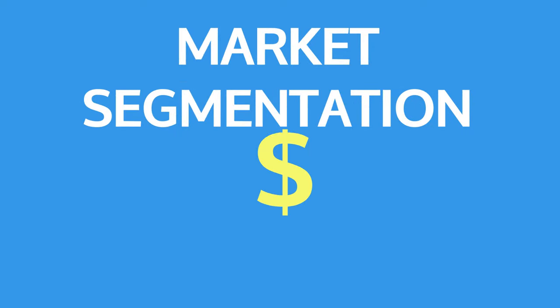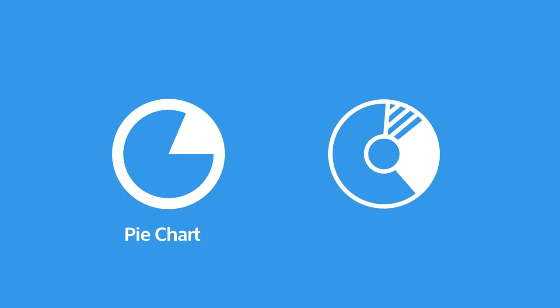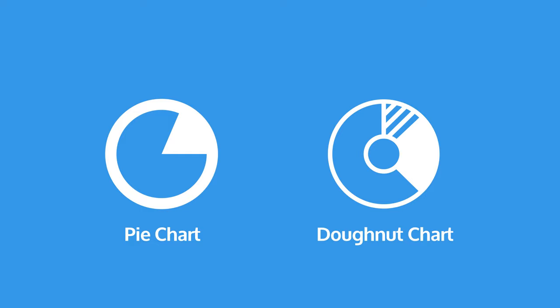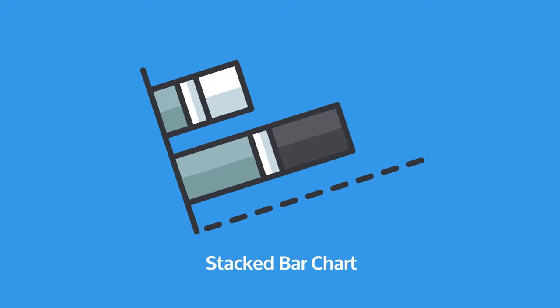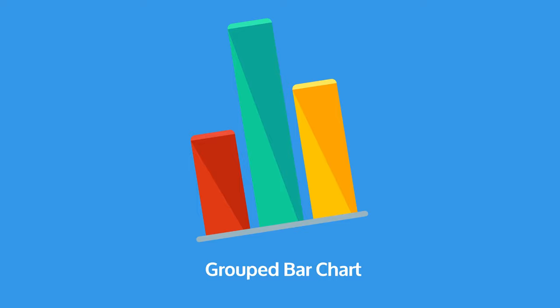Use stacked bar or donut charts to show market composition. Another core component of the finances section is market segmentation, which shows the breakdown of annual sales into different categories. Traditionally sales breakdowns are visualised with pie or donut charts, but the problem with pie charts is that they're quite difficult to accurately read — instead use a stacked bar chart. Use grouped bar charts to visualise year-over-year performance. The side-by-side bars emphasise the changes from one year to the next.